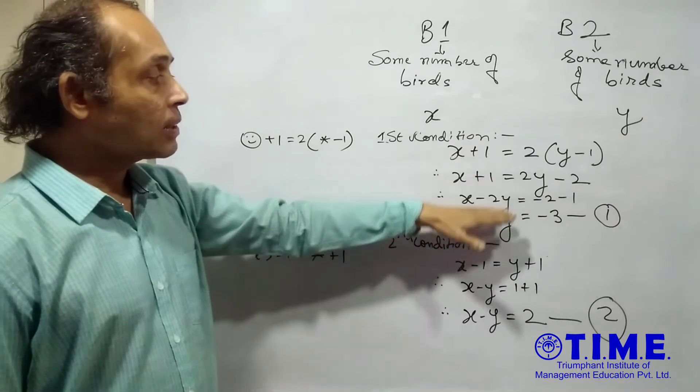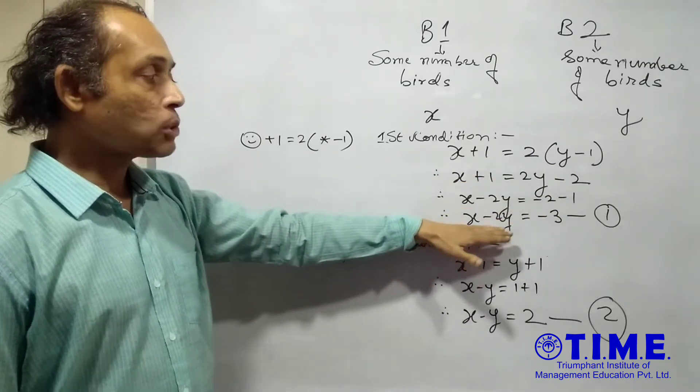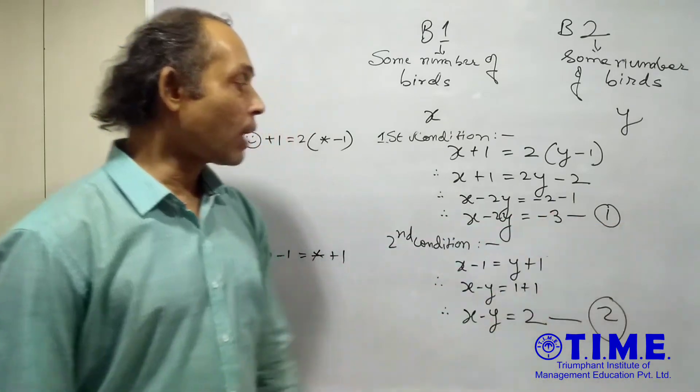So X plus 1 is equal to twice Y minus 1. So finally we get, after simplifying the equation, we get X minus 2Y equal to minus 3. That is equation number 1.